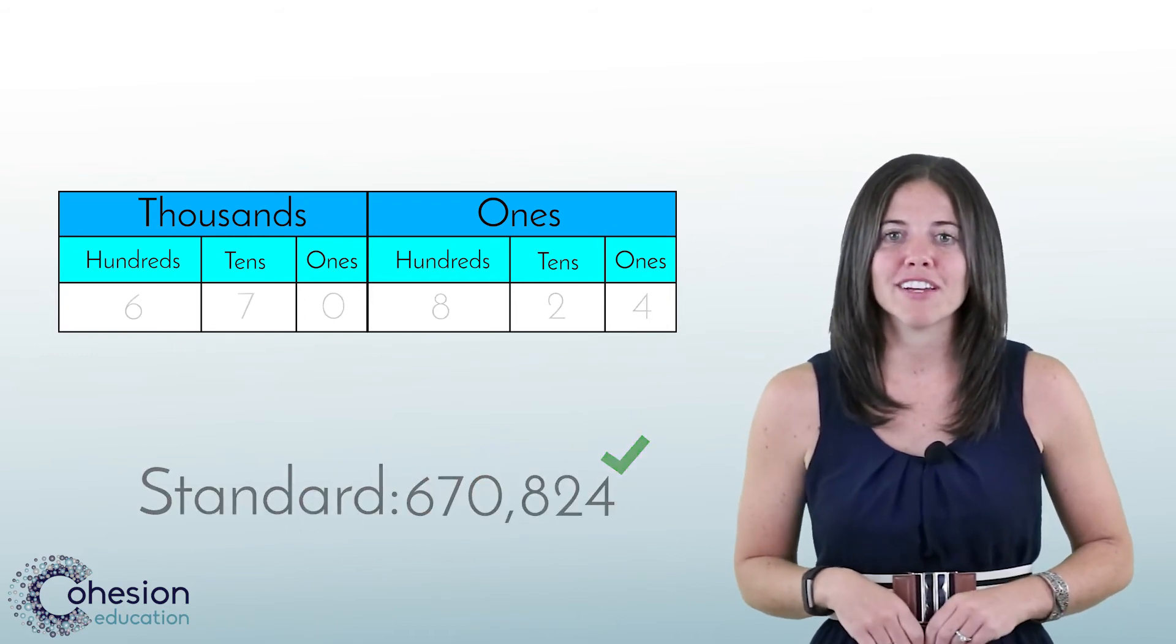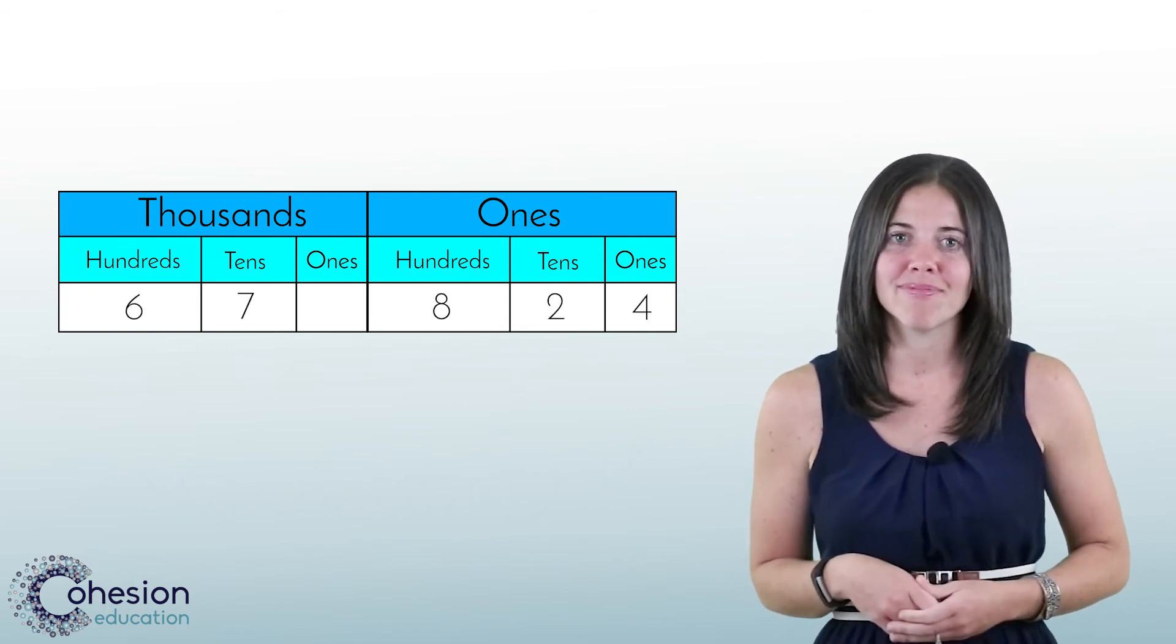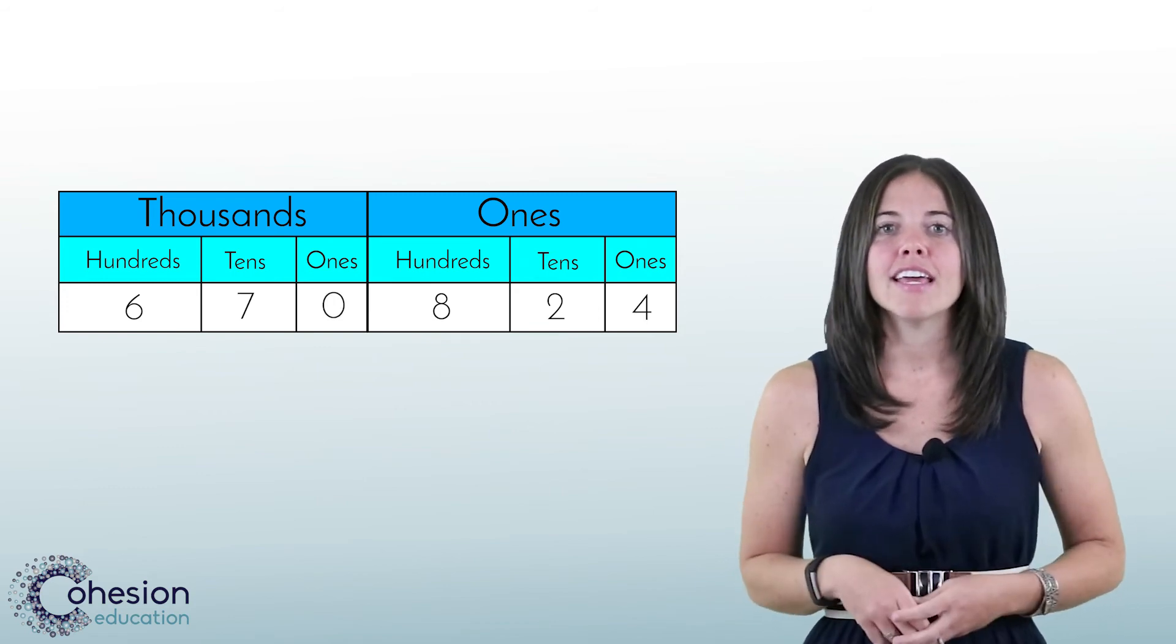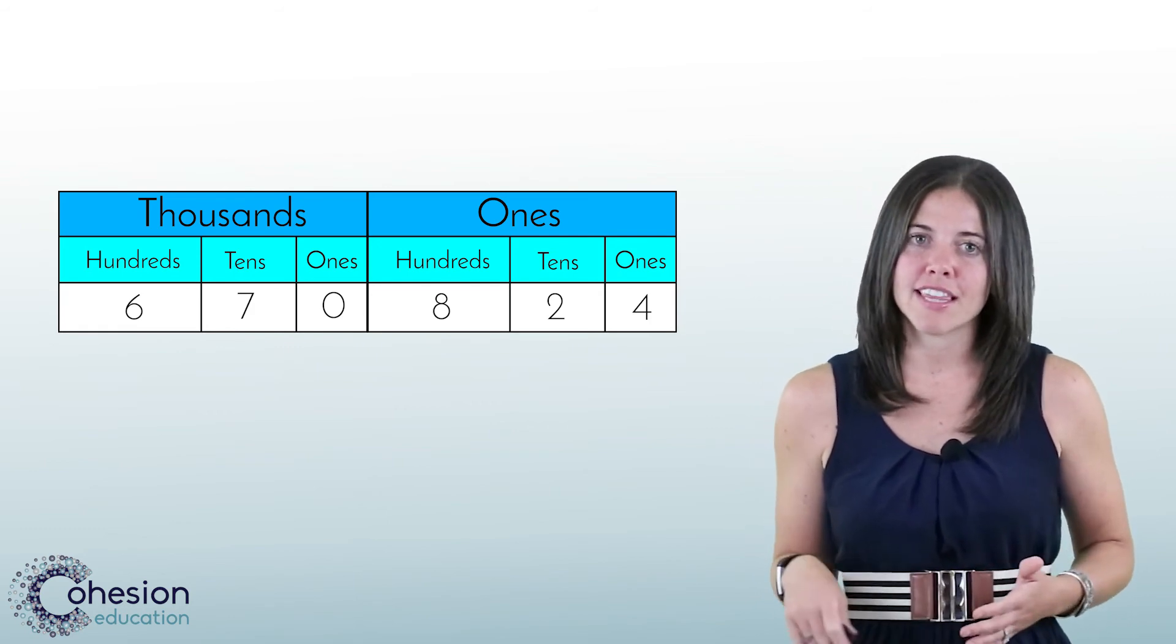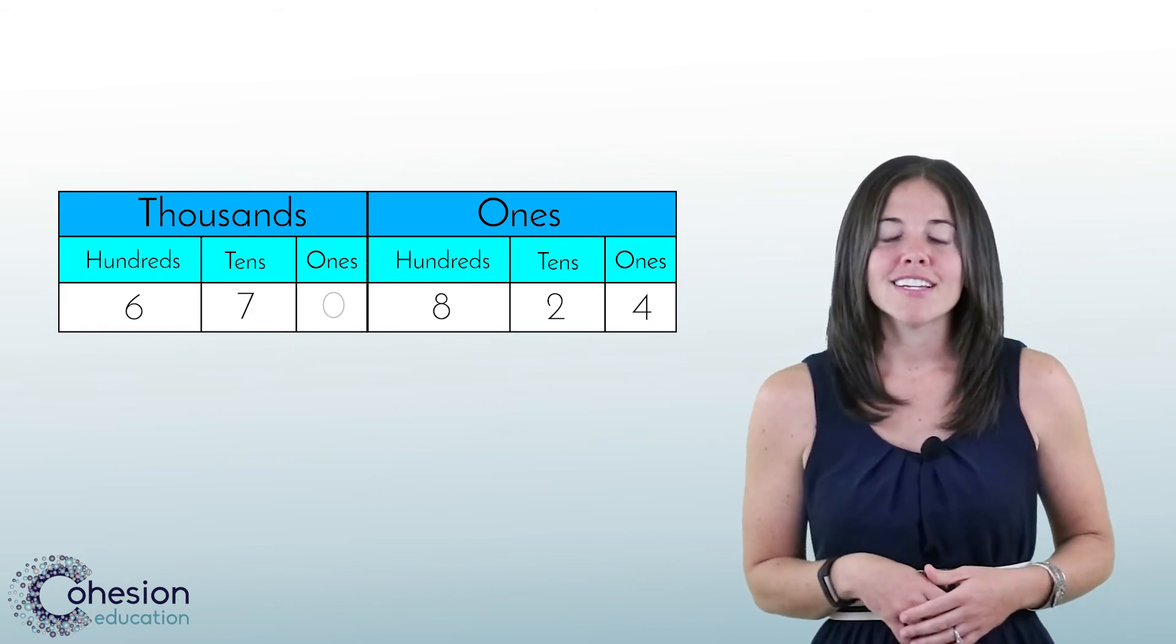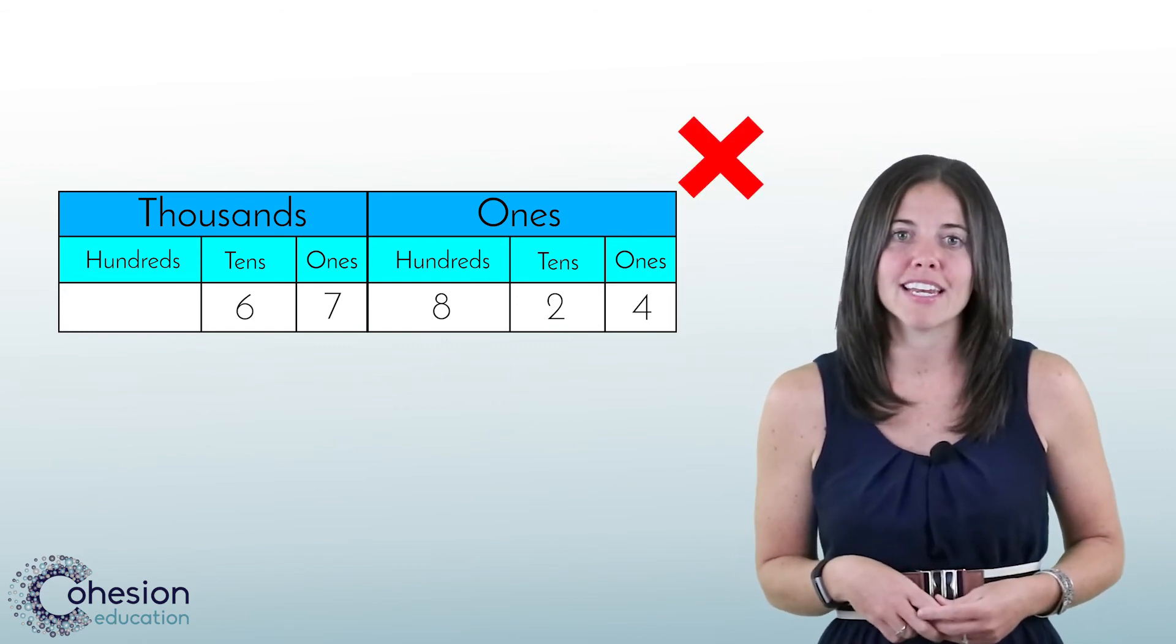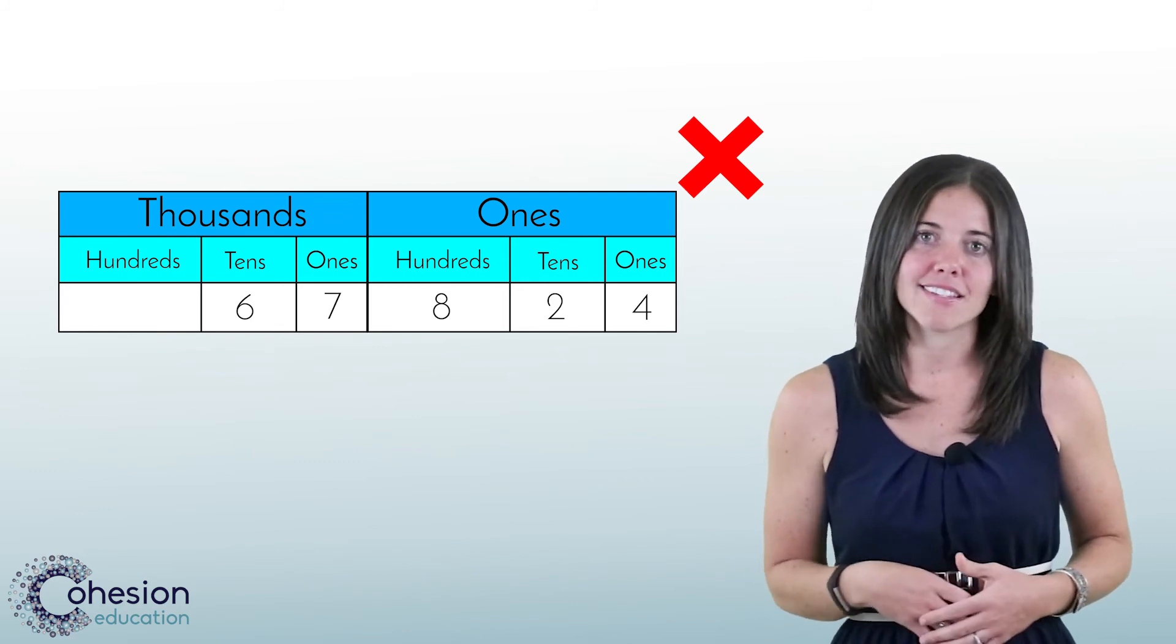Using a place value chart will help the student accurately place the numbers and determine when a zero is needed. In this case, the zero represents zero thousands. If the student left this out, it would change the number from 670,824 to 67,824, completely changing the value represented, as 7 is now in the thousands place and 6 is in the ten thousands place.